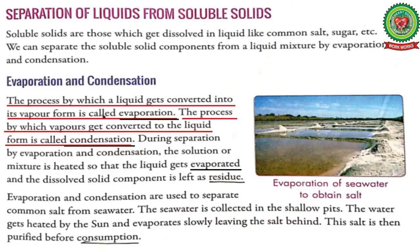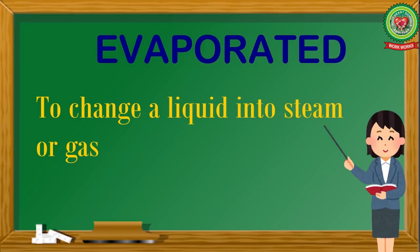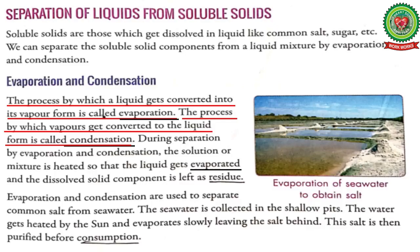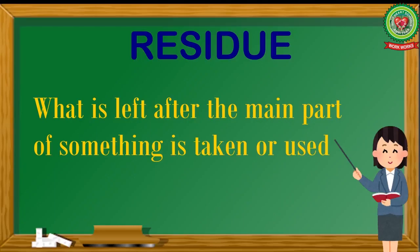During evaporation and condensation, the solution or mixture is heated so that the liquid gets evaporated and the dissolved solid component is left as residue. Now underline the word 'evaporated' and write its meaning: to change a liquid into steam or gas.